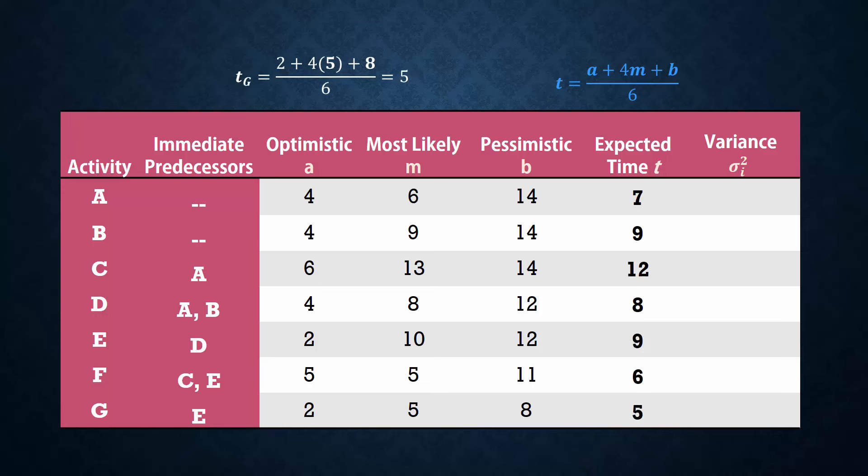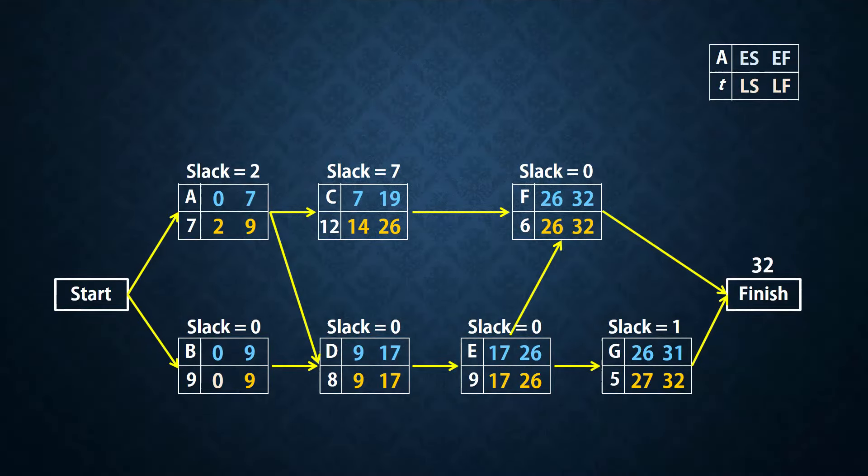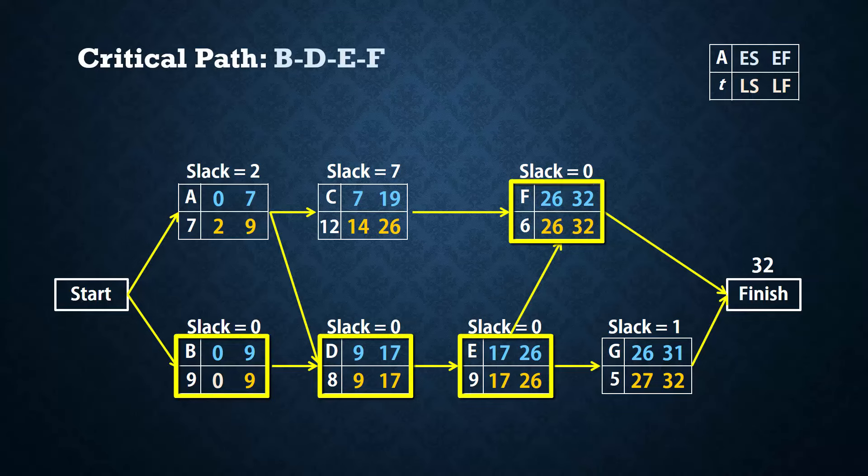And using these expected activity times and predecessors, I completed the project network from scratch in an earlier video. You will find the link provided in description. The critical path is b, d, e, f, and the project completion time is 32 weeks.